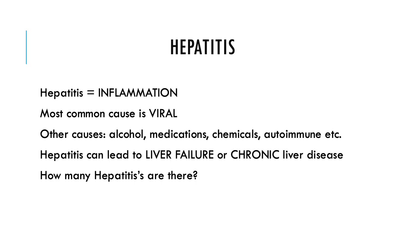This PowerPoint is really going to focus on hepatitis. Hepatitis — remember, itis means inflammation — so it's an inflammation of the liver. Usually it's from a viral cause, but it can also be caused by alcohol, medications, chemicals, or autoimmune disorders. And hepatitis can lead to that acute liver failure or chronic liver disease, things like cirrhosis.